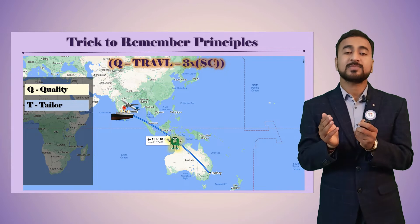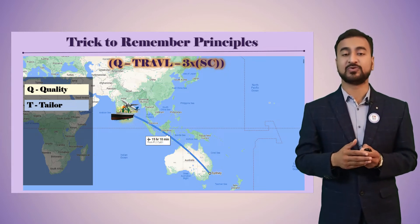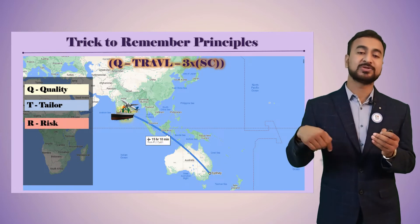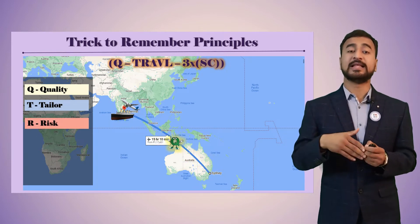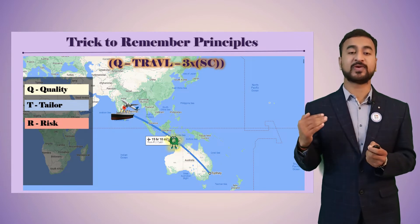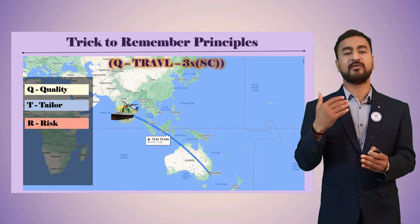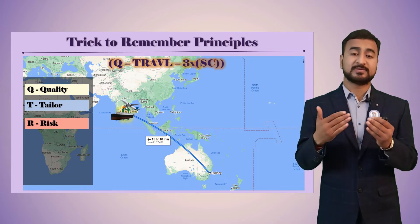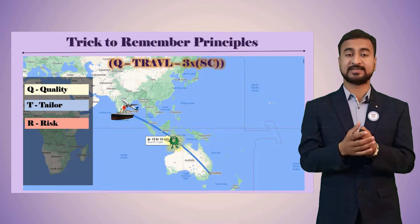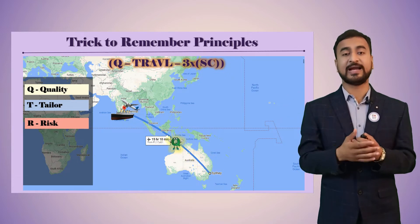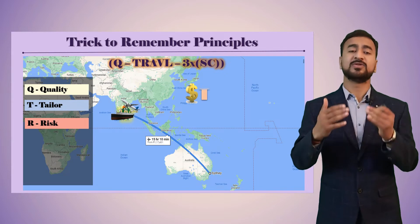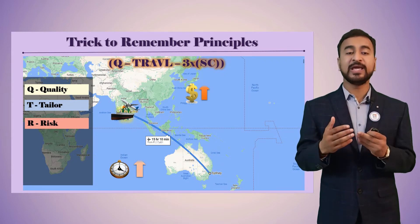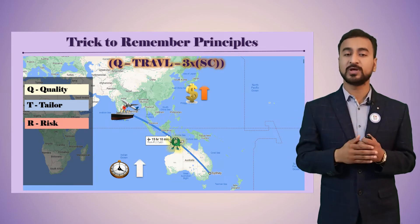He chooses to travel through air, and that represents Risk — because traveling through the air carries the risk of delays, incidents, and policy issues. He evaluates both options: if he goes by air, cost is high but time is less; if he goes by ship, time is high.